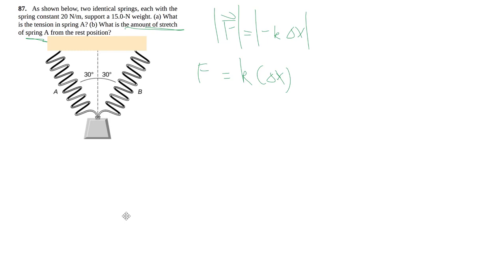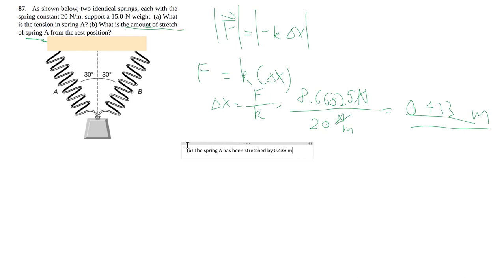Delta x is simply some simple algebra. We have F to be 8.66025 newtons divided by the spring constant which is given. Newton cancels out, you flip it up, and you expect to get meters, and of course you do. That's your answer: 0.433 meters or 43 centimeters. But the key here is that doesn't mean the length of the spring is 0.433 meters. It's only been stretched by 0.433 meters.